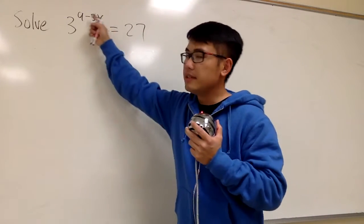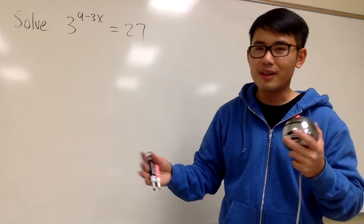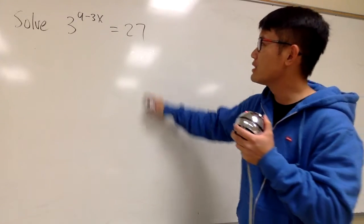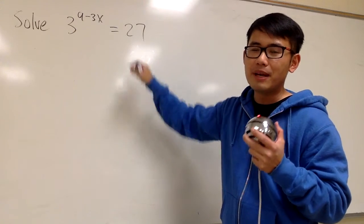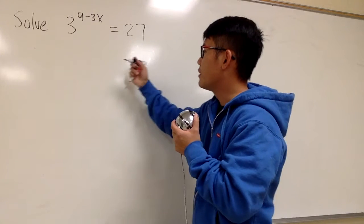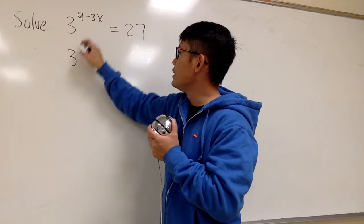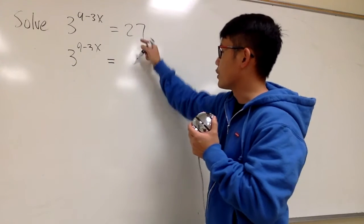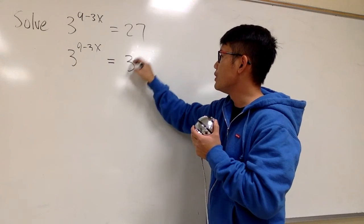Usually when the x is in the exponent, we should take the log on both sides. However, we don't have to do it like that, because for 27, we know this is the same as 3 to the third power. So we can look at this as 3 raised to the 9 minus 3x, and this is equal to, for the 27, I'll write it down as 3 to the third power.